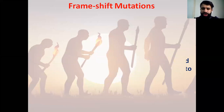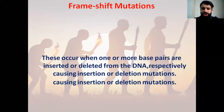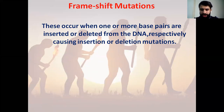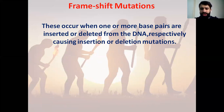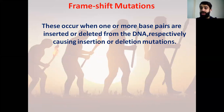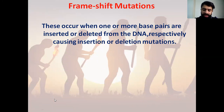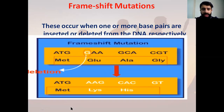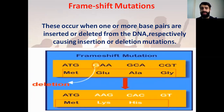Frameshift mutations: frameshifts are insertion or deletion. A frameshift occurs when we have one or more base pairs that are either inserted or deleted. So if they are inserted, this will cause insertion mutation; or if they are deleted, they are called deletion mutations.